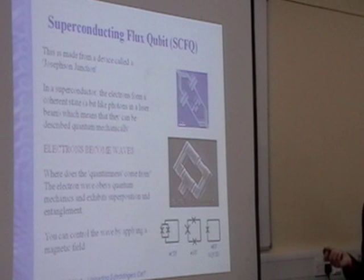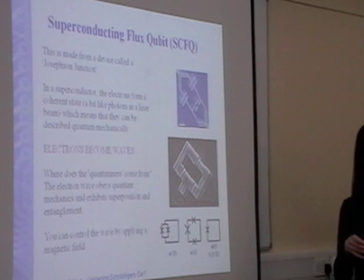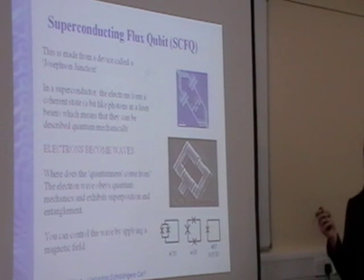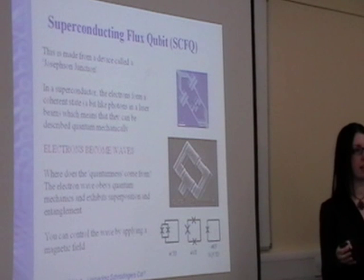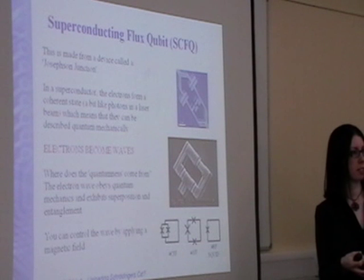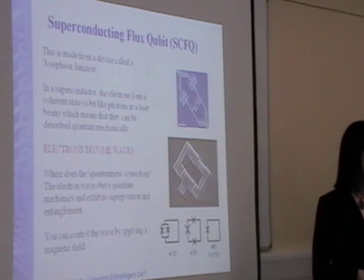The interesting thing about these systems is you can control this electron wave by applying a magnetic field to it. The really important thing about this system is you have a classical way of controlling a quantum object. Classically, you apply a magnetic field to the object. You don't need a special quantum magnetic field. You just use a regular old magnetic field and you can actually control your quantum object using that field.